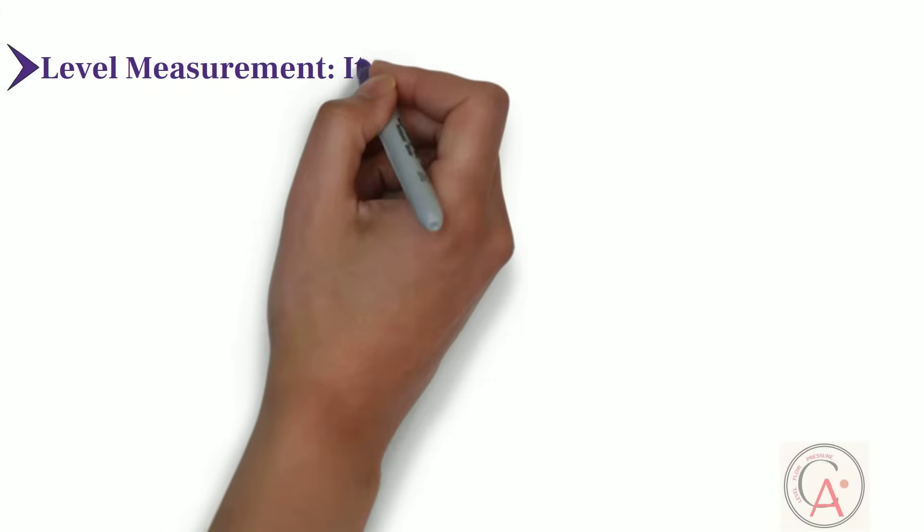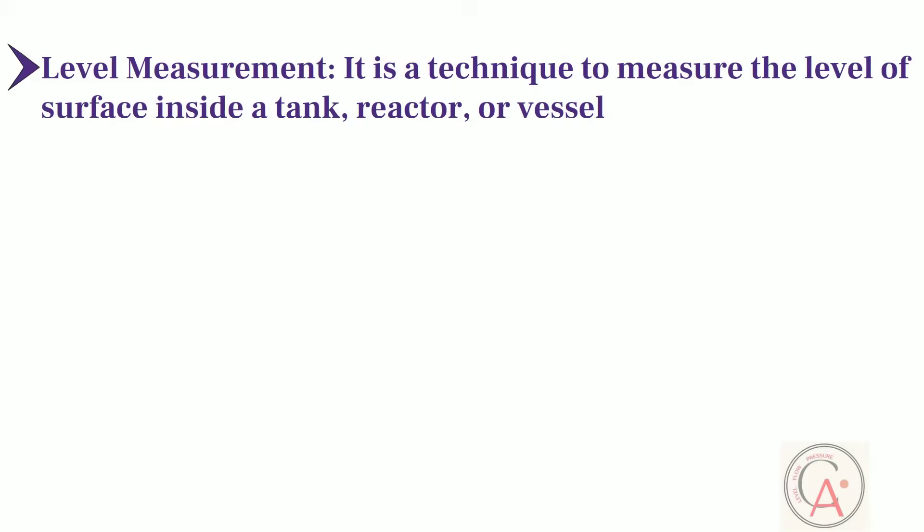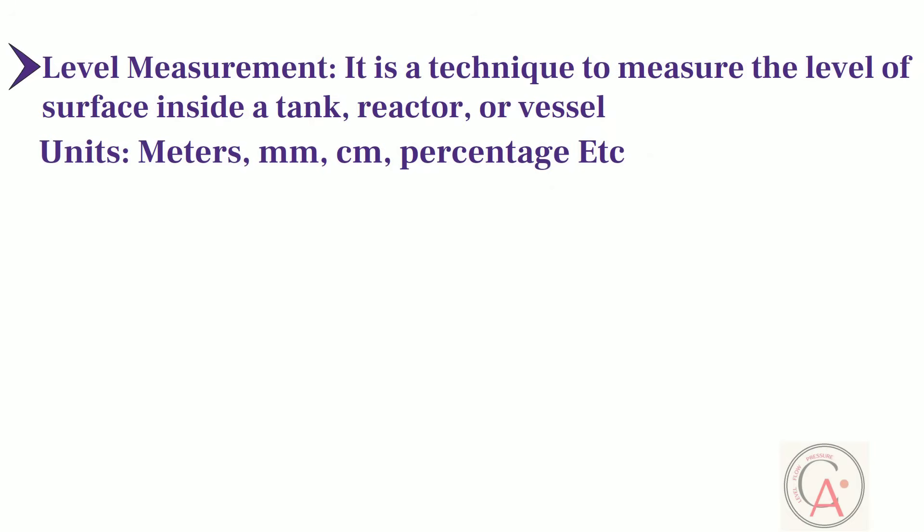Third type of process variable is level measurement. It is a technique to measure the level of surface inside a tank, reactor, or vessel. It is usually measured in meters, millimeter, centimeter, percentage, etc.